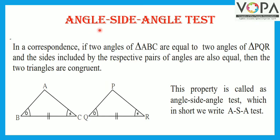The second test is the Angle-Side-Angle test. In a correspondence, if two angles of triangle ABC are equal to two angles of triangle PQR, and the sides included by the respective pairs of angles are also equal, then the two triangles are congruent. This property is called the Angle-Side-Angle test, or ASA test for short.